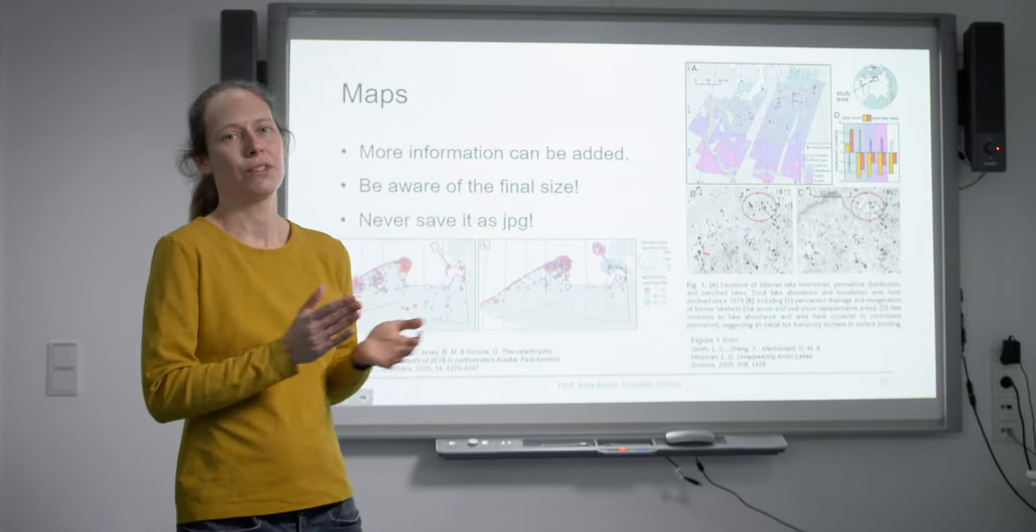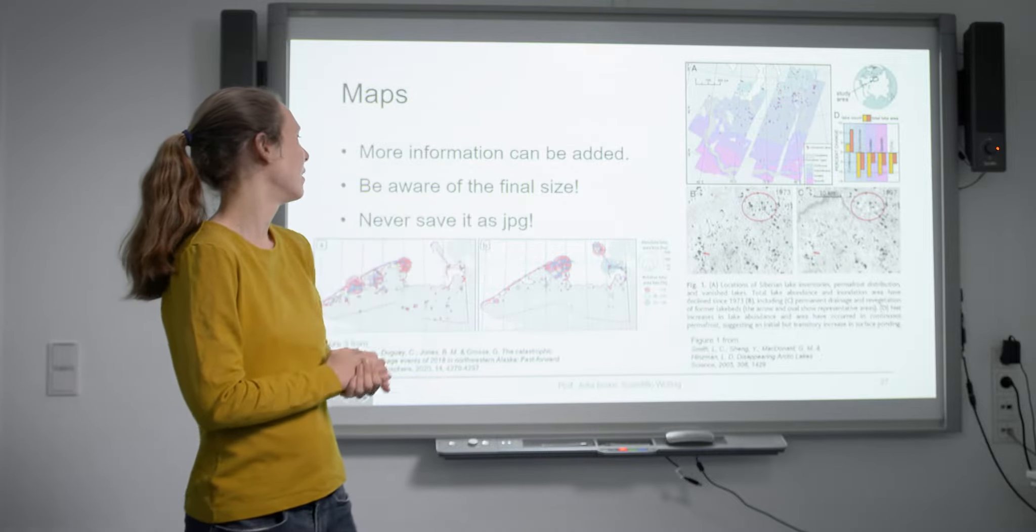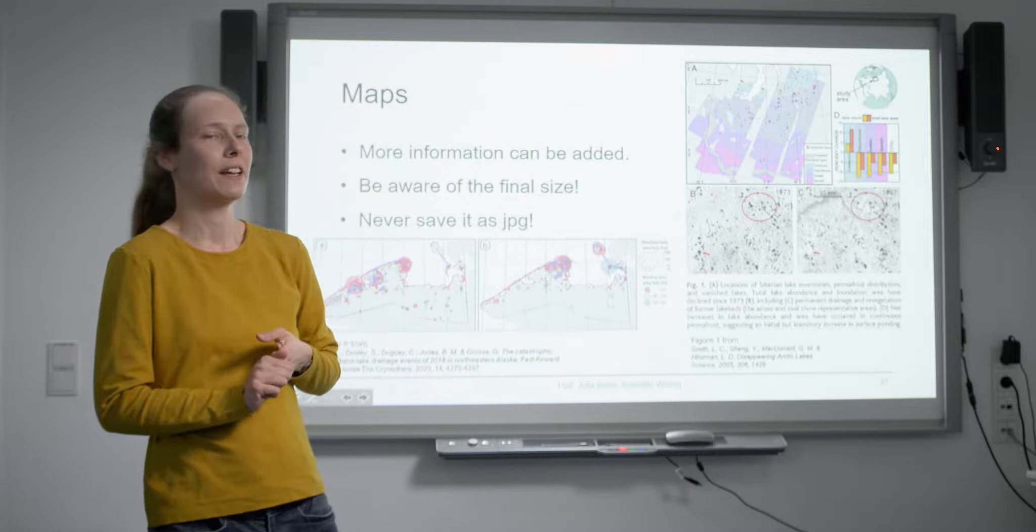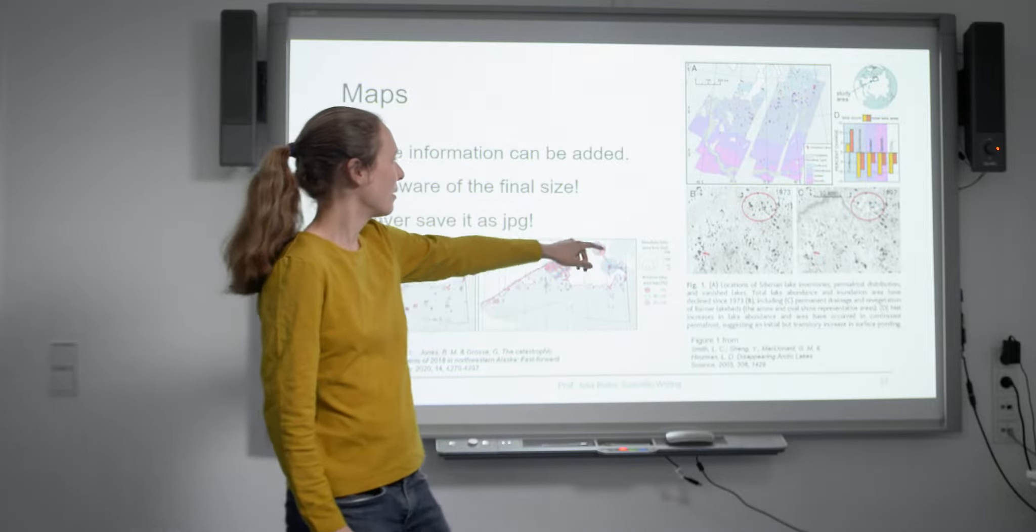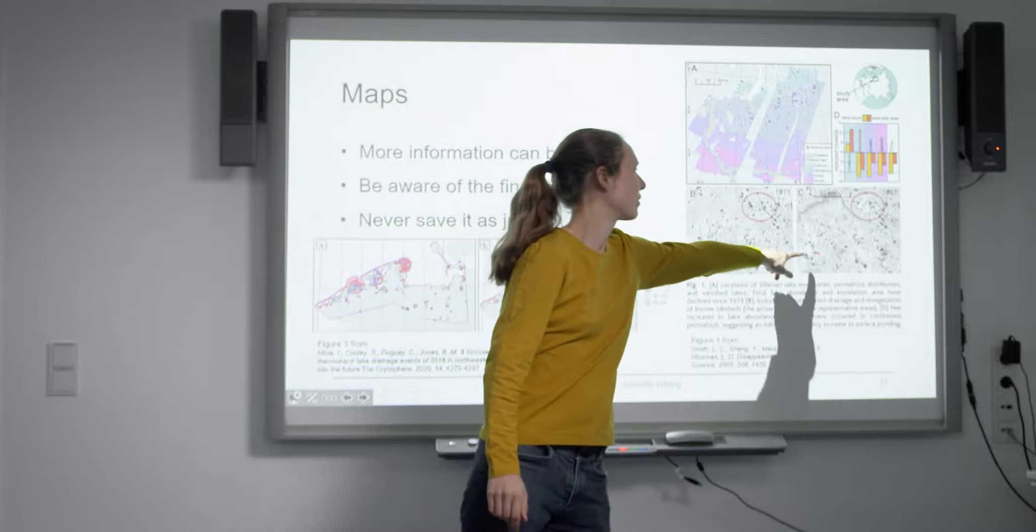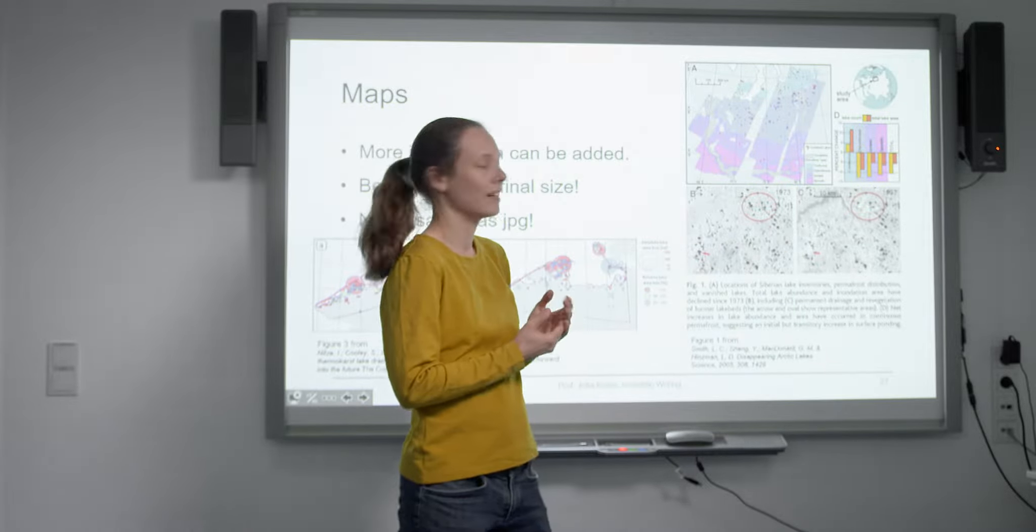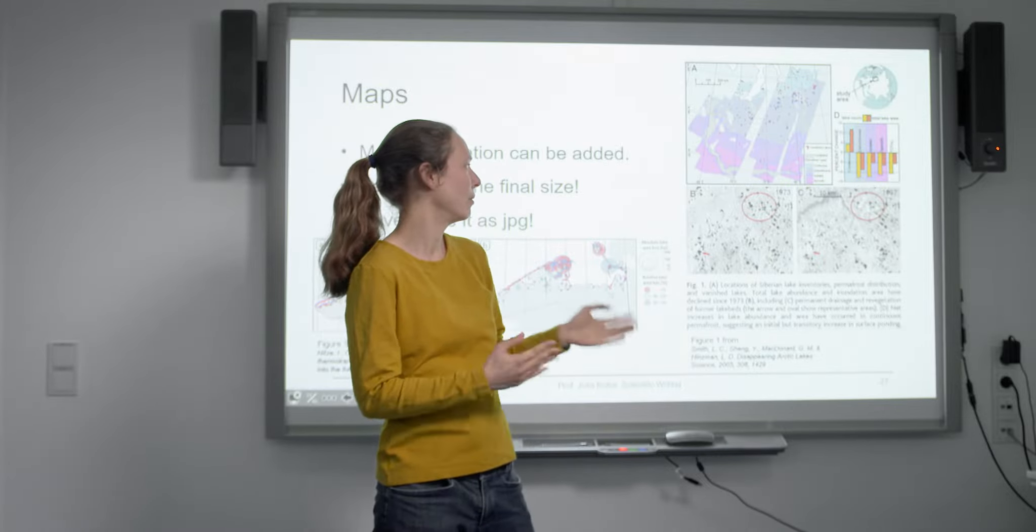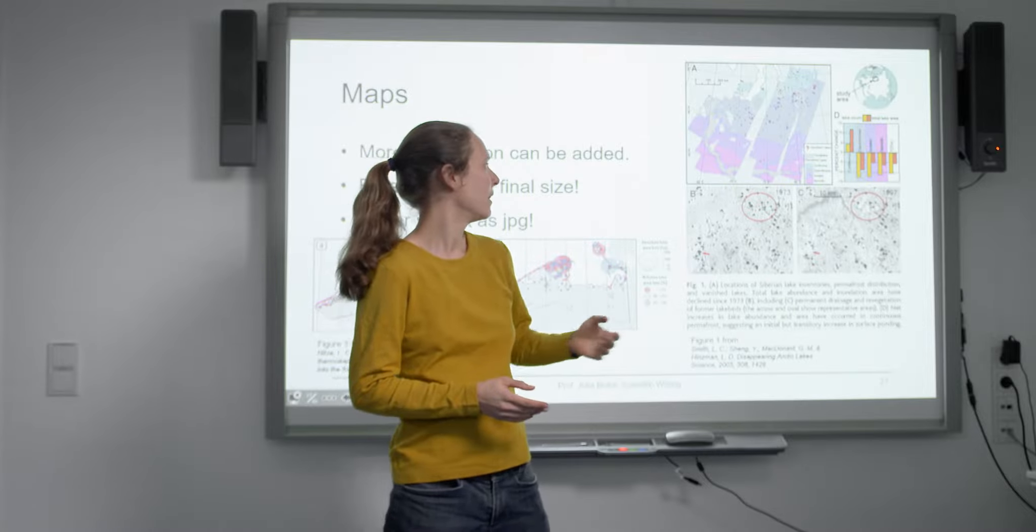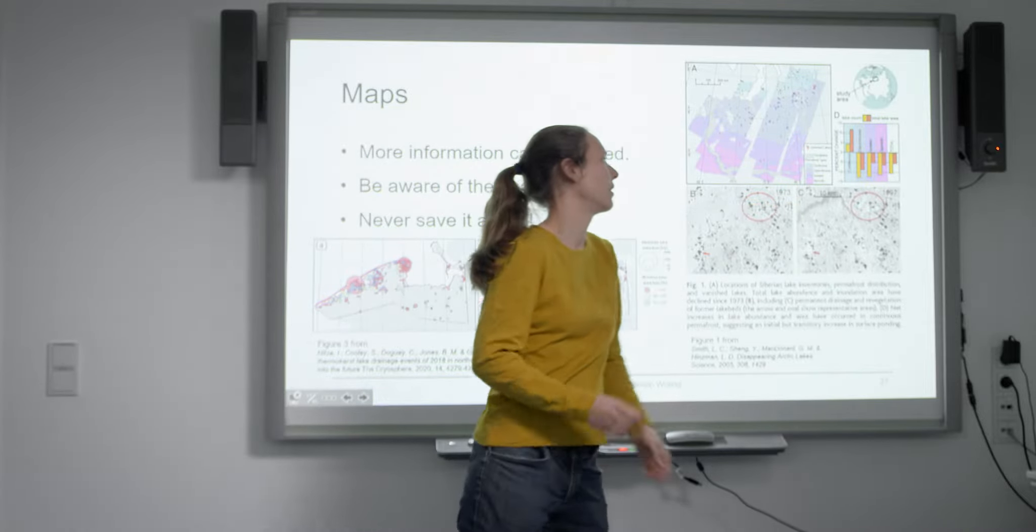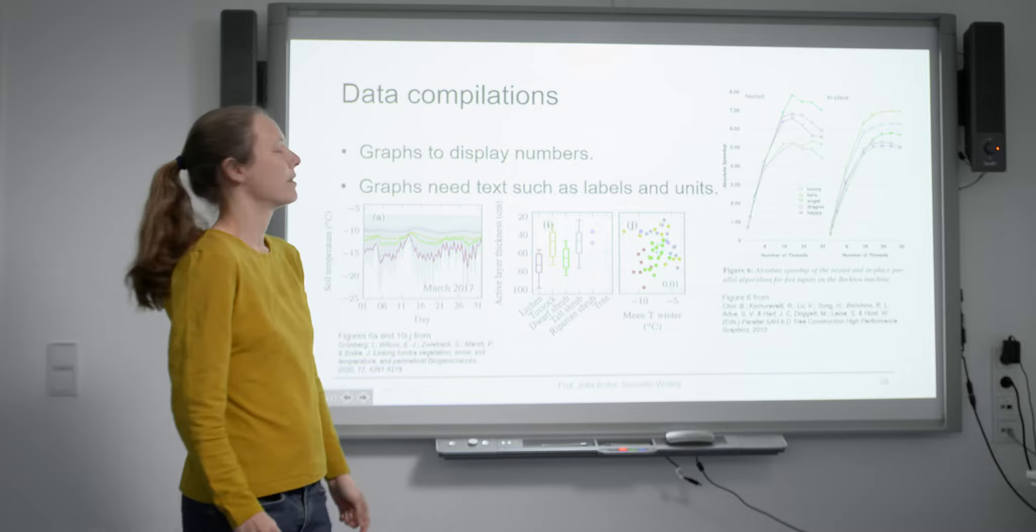These are also more examples of how you can add more information. Here I showed you color and size of the dots, but also you can add additional information, for example a little arrow pointing at the lake that drains. This is a different study also about lake drainage but a little bit earlier. This circle also highlights important things and here you have the scale bar as I mentioned before, which might be very useful for maps.